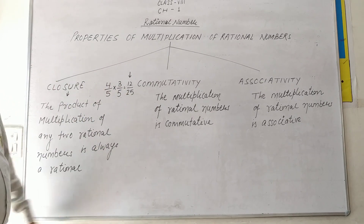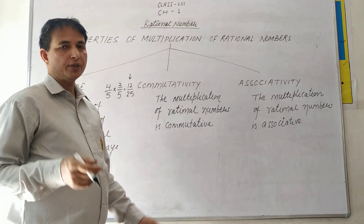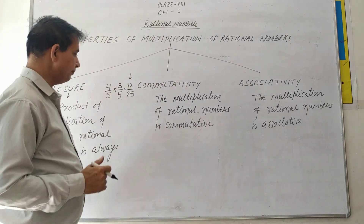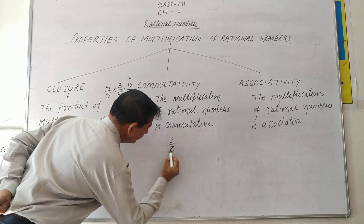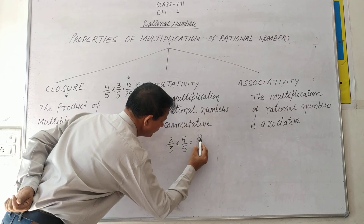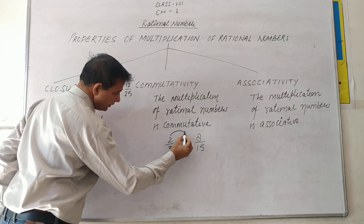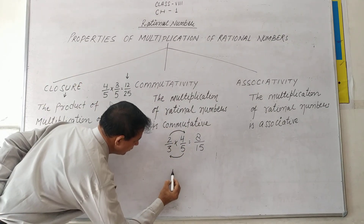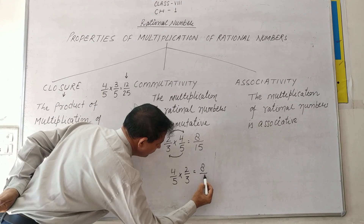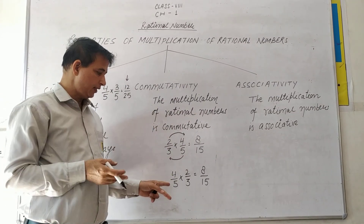The second property is the commutative property. Multiplication of rational numbers is commutative — if you multiply two rational numbers and then change their order and multiply again, the answer is the same. For example: 2 upon 3 multiplied by 4 upon 5 equals 8 upon 15. Changing the order: 4 upon 5 multiplied by 2 upon 3 also equals 8 upon 15.